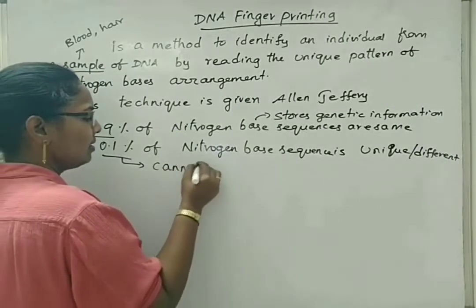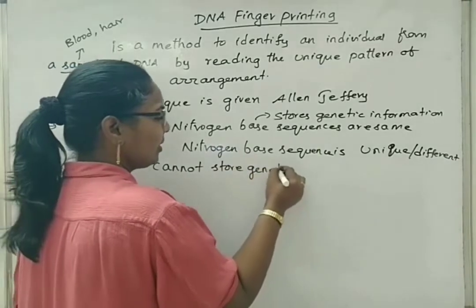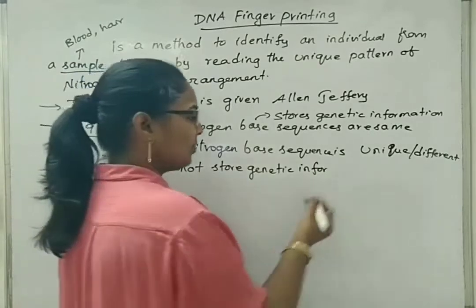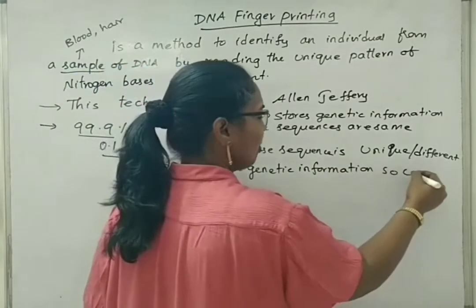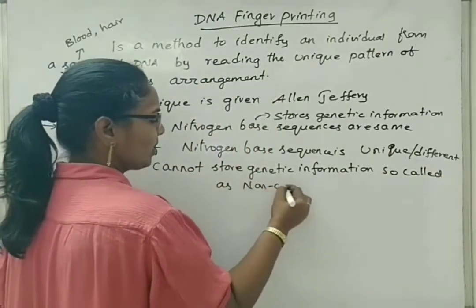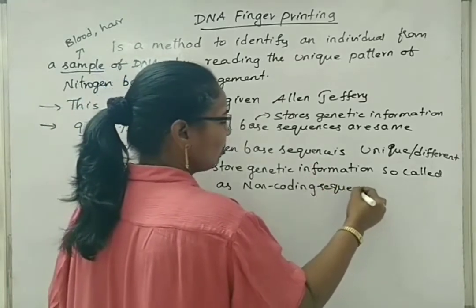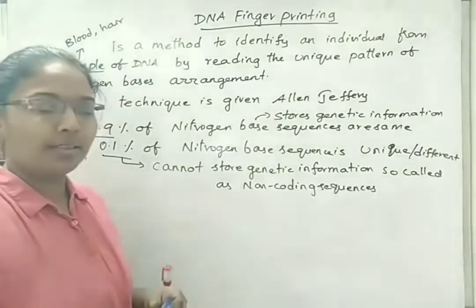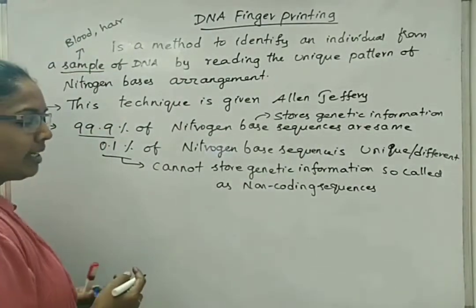These non-coding sequences do not store genetic information. They are not responsible for coding or translation into any type of amino acids, so they are called non-coding sequences. We have seen non-coding sequences during transcription in the form of hnRNA, where we have seen introns and exons.